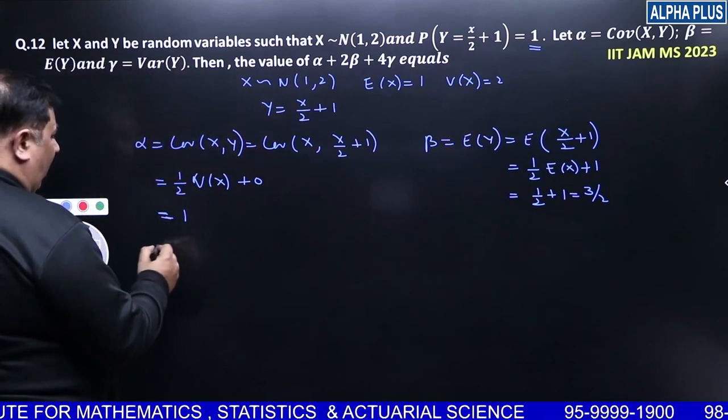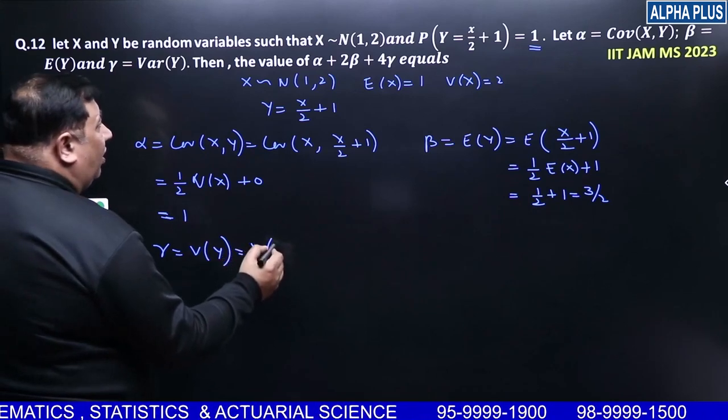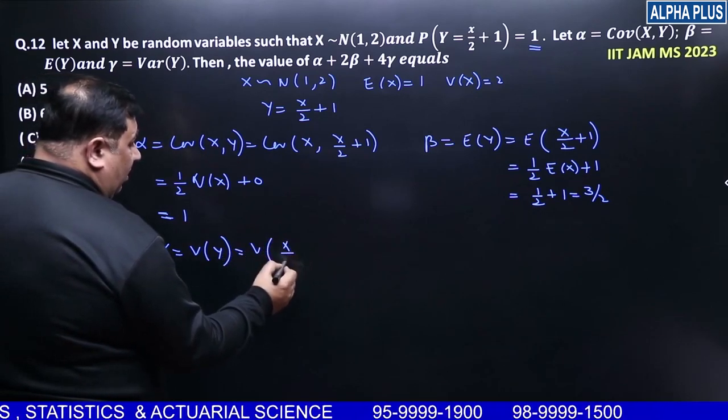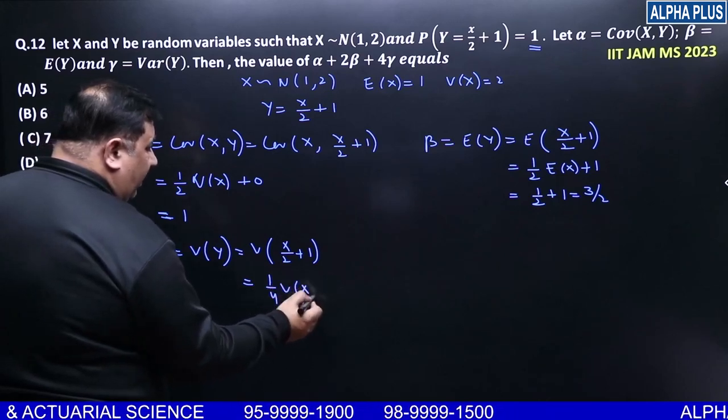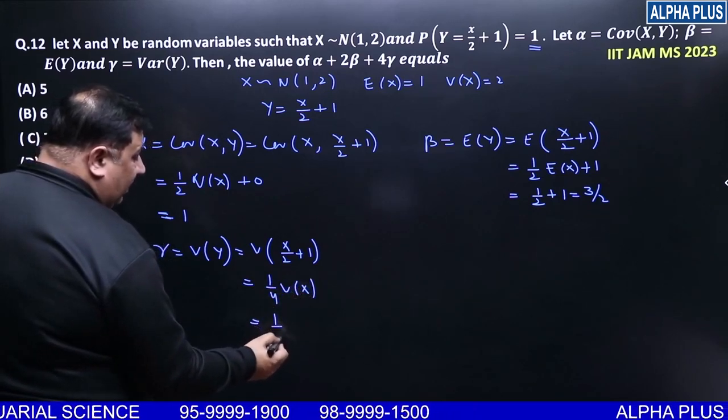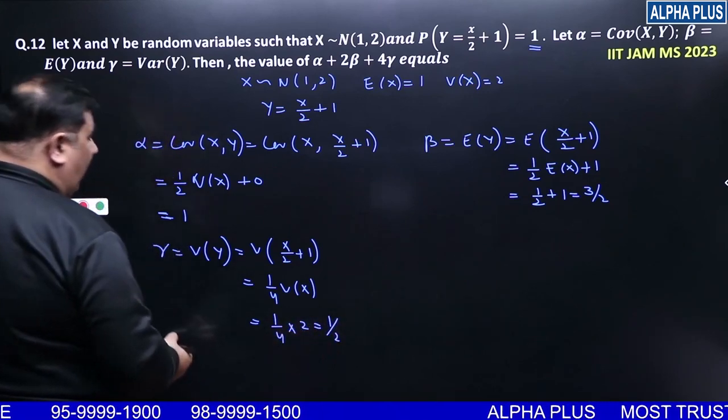Then we have gamma is equal to variance of Y. It is a very easy question. 1 by 4 variance of X. And what is variance of X actually? Is 2, which is 1 by 2. So, we have alpha, beta, gamma.